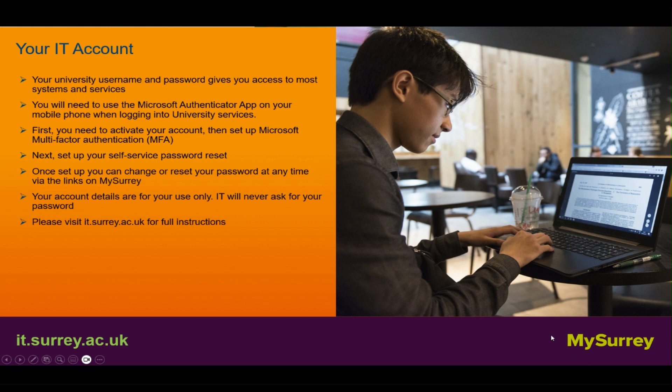Your university username and password gives you access to most systems and services. You will need to use the Microsoft Authenticator app on your mobile phone when logging into university services. First, activate your account, then set up your Microsoft multi-factor authentication. Next, set up your self-service password reset. Once set up, you can change or reset your password at any time via the links on My Surrey. Your account details are for your use only — IT will never ask you for your password. Please visit it.surrey.ac.uk for full instructions.